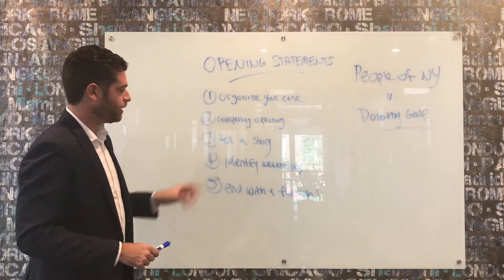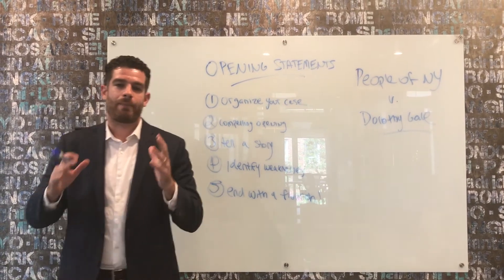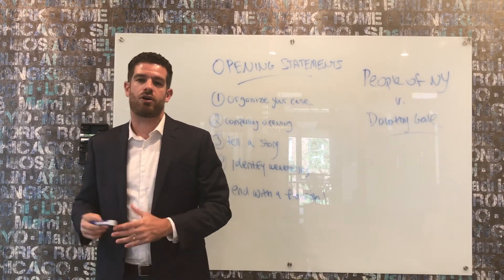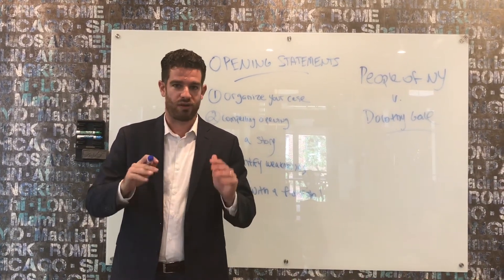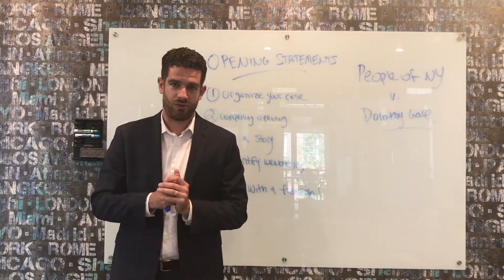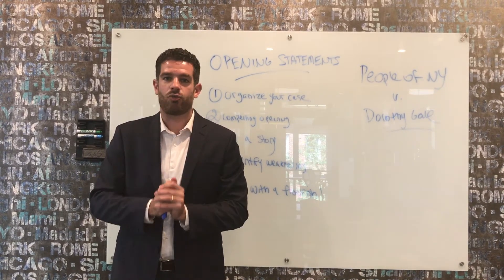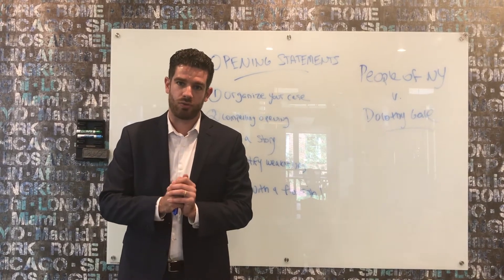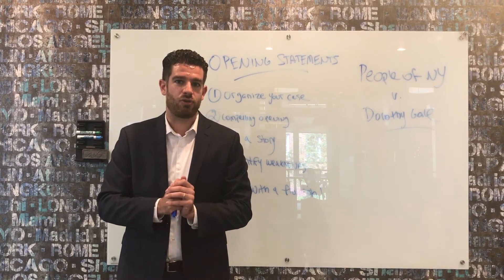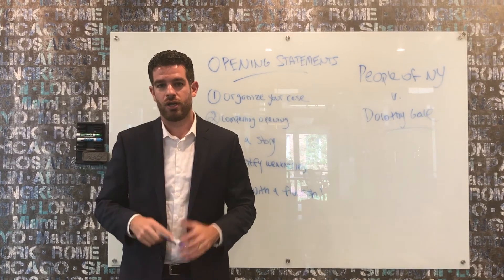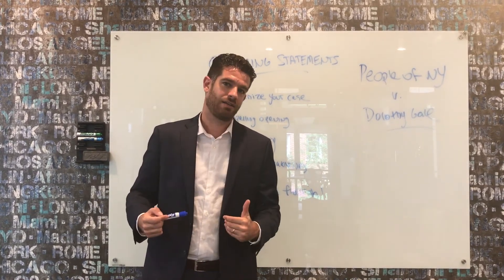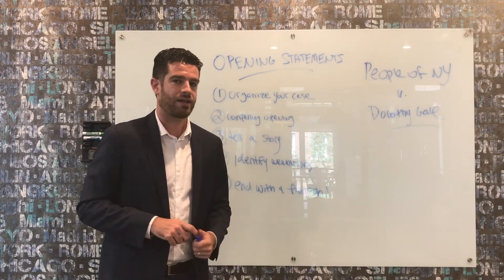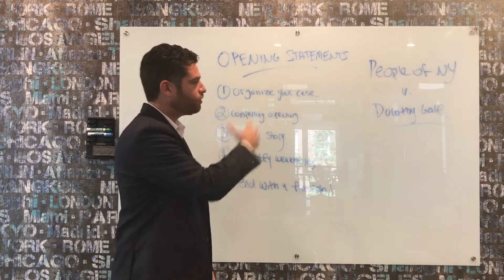In the same way that you want to start with a compelling opening, you're going to want to end with a flourish — and by ending with a flourish, I don't just mean using more compelling language. You're going to want to provide the jury with a specific call to action that they will remember during the case. For instance, you might say: 'At the end of this case, I'm going to come back to you and ask that you return a verdict of guilty.' You're not asking yet because you haven't presented the evidence, but you're telling them you will come back with that ask, and in the back of their minds the jurors will remember that call.